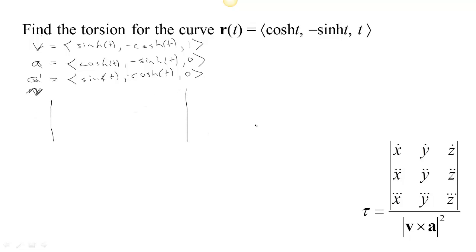So the first row is the first derivatives of the components with respect to t, which is really the velocity: sinh t, -cosh t, and 1. And then the second row is the acceleration: cosh t, -sinh t, and 0. And then the third row is the jerk: sinh t, -cosh t, and 0.